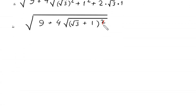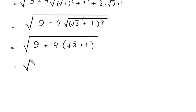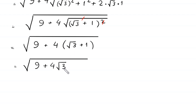Next, square root of 9 plus 4 times square root of — by using this algebraic identity, square root of 3 squared plus 1 squared plus 2 times square root of 3 times 1 becomes (square root of 3 plus 1) whole squared. This square will be cancelled out with the square root, leaving us with: square root of 9 plus 4 times (square root of 3 plus 1).